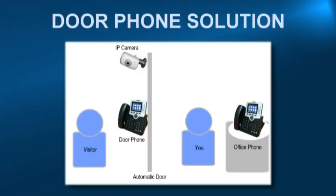Let's now take a look at the framework of a DAW phone solution. When a visitor makes a call from the DAW phone to your office, the office phone will display live video streaming of the visitor directly from the DAW IP camera. You can decide whether to pick up or reject the call after you see who is calling.